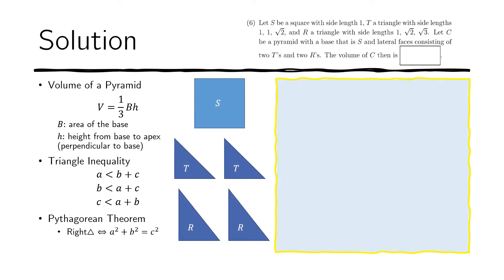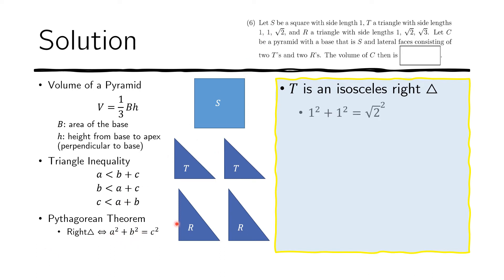Let us now examine what we were given. We are given triangle T, which is an isosceles right triangle because it's 1, 1, and square root of 2. We notice that it satisfies the Pythagorean theorem because 1 squared plus 1 squared equals square root of 2 squared. Therefore each T is a right triangle.